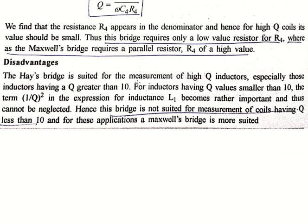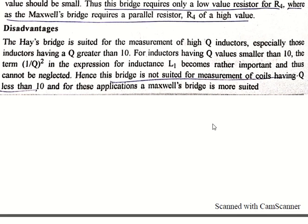The disadvantage of Hay's bridge is that it is suited only for the measurement of high-Q inductors, especially those having Q greater than 10. For inductors having Q less than 10, the term 1/Q² in the expression of L1 becomes important and cannot be neglected. Hence this bridge is not suited for coils having Q less than 10, and for these applications Maxwell's bridge is more suited.